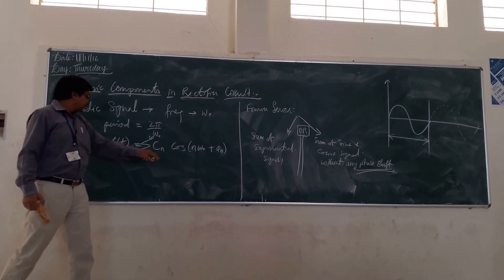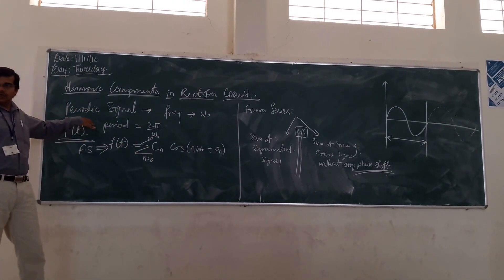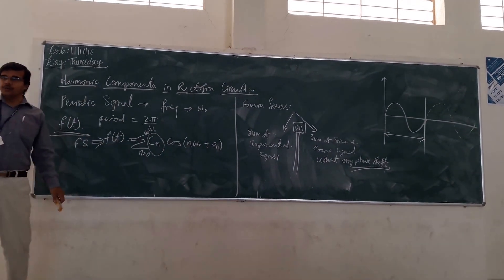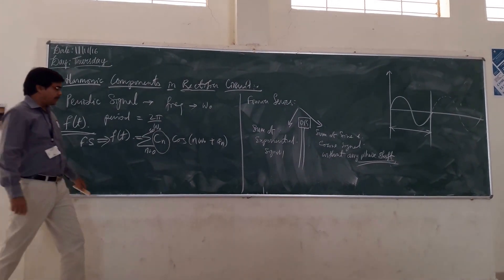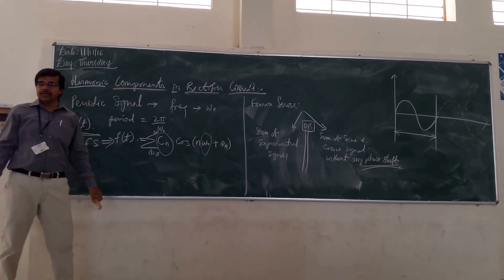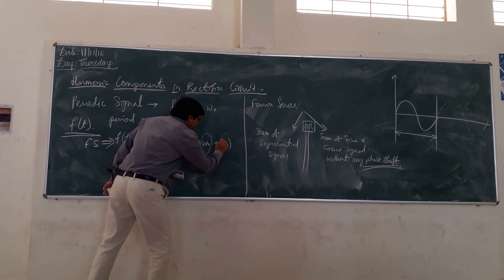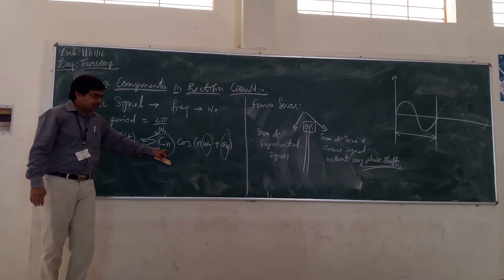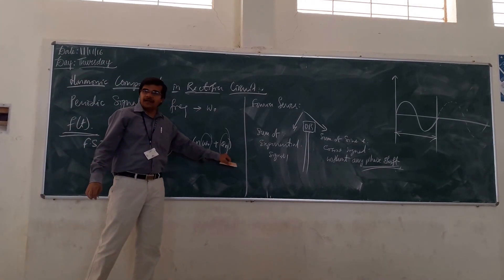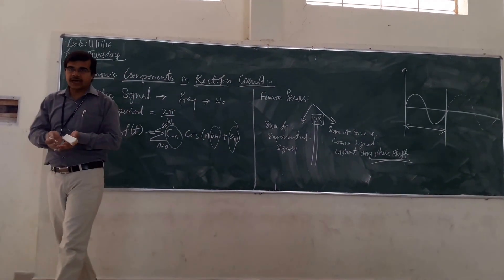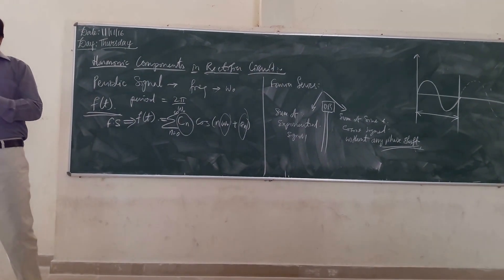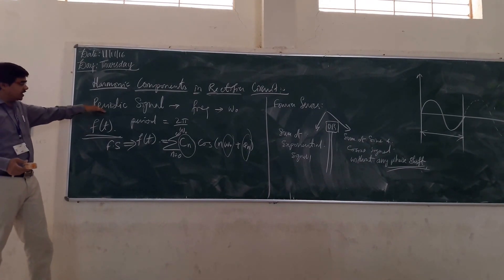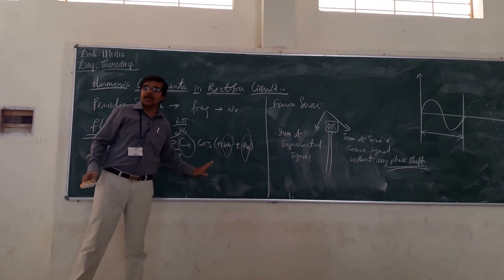This is one periodic signal. What are the different components it is having? It is having the amplitude, it is having the frequency component, and it is having the phase. So amplitude, frequency, and phase — all the components are there. And if you want to know the complete information about any signal, these three components are required.